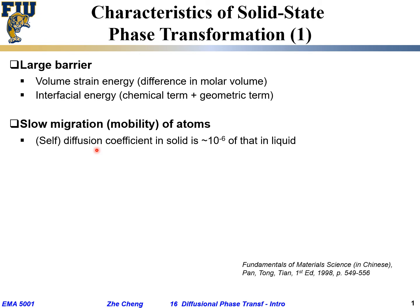One example is the self-diffusion coefficient in a solid. Even without a concentration gradient, atoms undergo random walk and wander away from their original location over time. However, the self-diffusion coefficient in a solid is only one-millionth (10⁻⁶) of that in liquid, meaning diffusion in solids is much, much slower than in liquid.